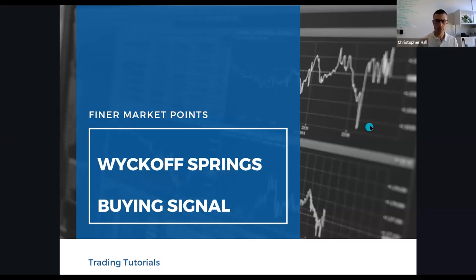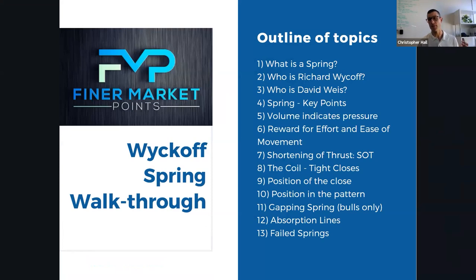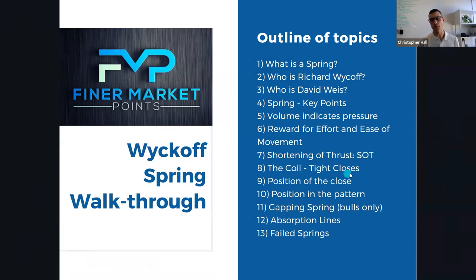We're going to work through these slides now. The agenda is: what is a spring, who is Richard Wyckoff, and also David Weiss. We'll look at the key points of a spring, the volume that indicates pressure, the reward for effort, and ease of movement — how that's used in interpreting a spring. Then shortening of thrust or SOT, the coil being tight closing in quick succession, the position of the close, the position of the pattern within the overall chart, gapping springs (used in bull markets only), absorption lines, and failed springs.